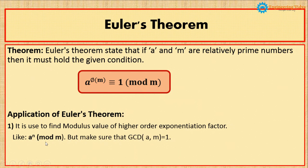But make sure that in that particular case the GCD of a and m should be equal to one, or in other words a and m should be relatively prime numbers. Then and only then we can solve a raised to n mod m kind of problem.